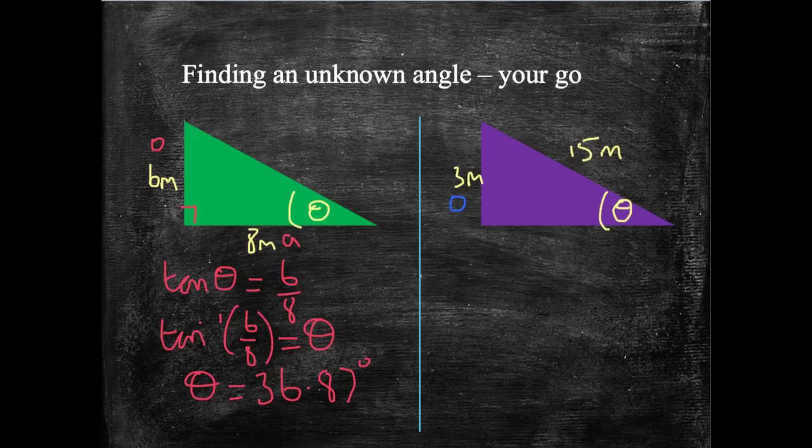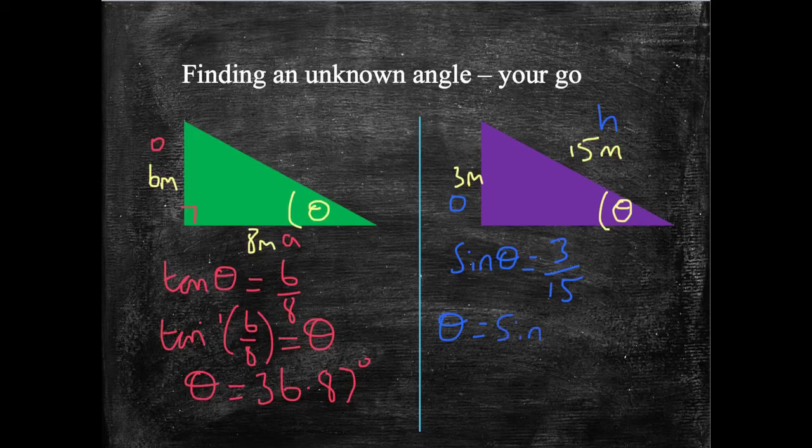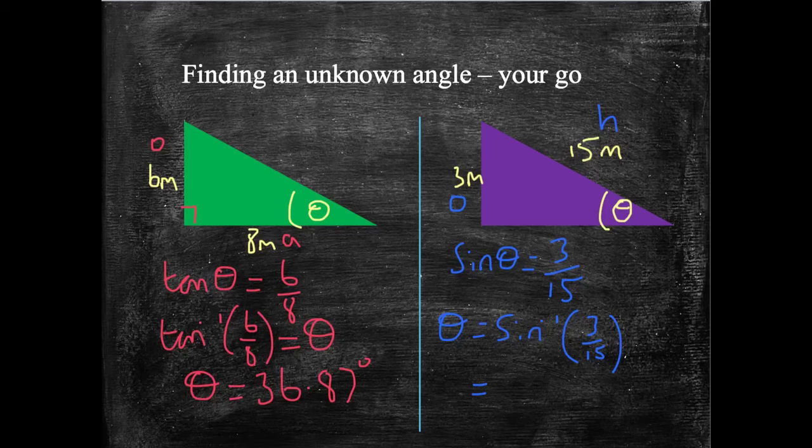Let's see on this one over on the right-hand side. This time, I've got the opposite and I've got the hypotenuse. Sine gives me that. So sin theta equals opposite over hypotenuse, 3 over 15. Theta equals sin to the minus 1 of 3 over 15. So again, on my calculator, shift sine gives me sine to the minus 1 on my display. 3 divided by 15, close my bracket, equals 11.54 degrees.